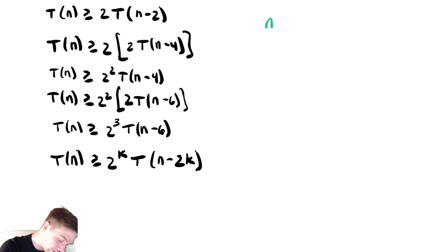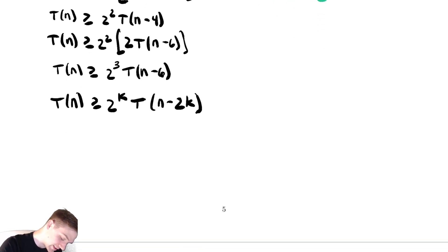We're going to choose n minus two k equal to our base case which was zero. And if we solve that for k we get k equals n over two. So this is